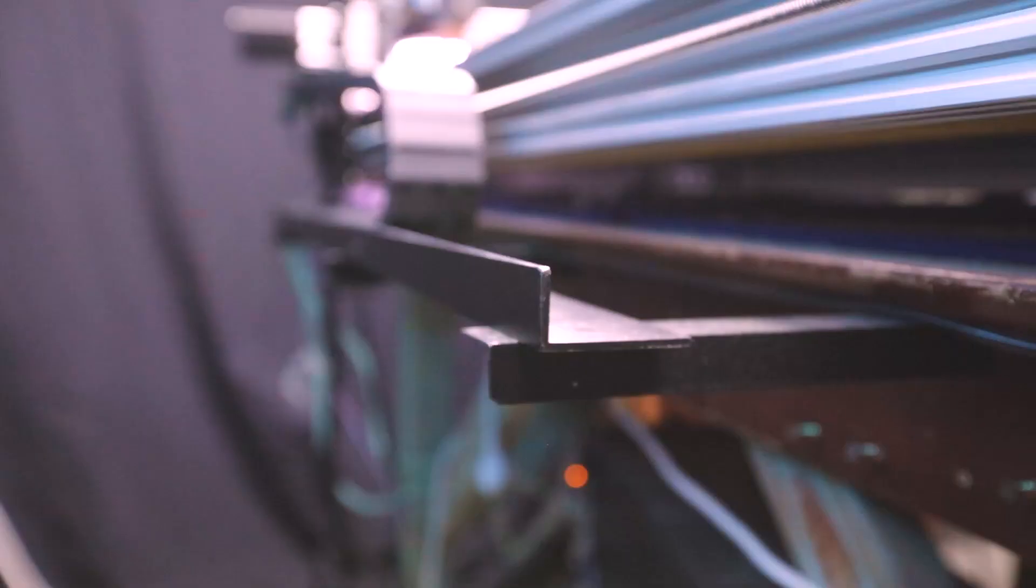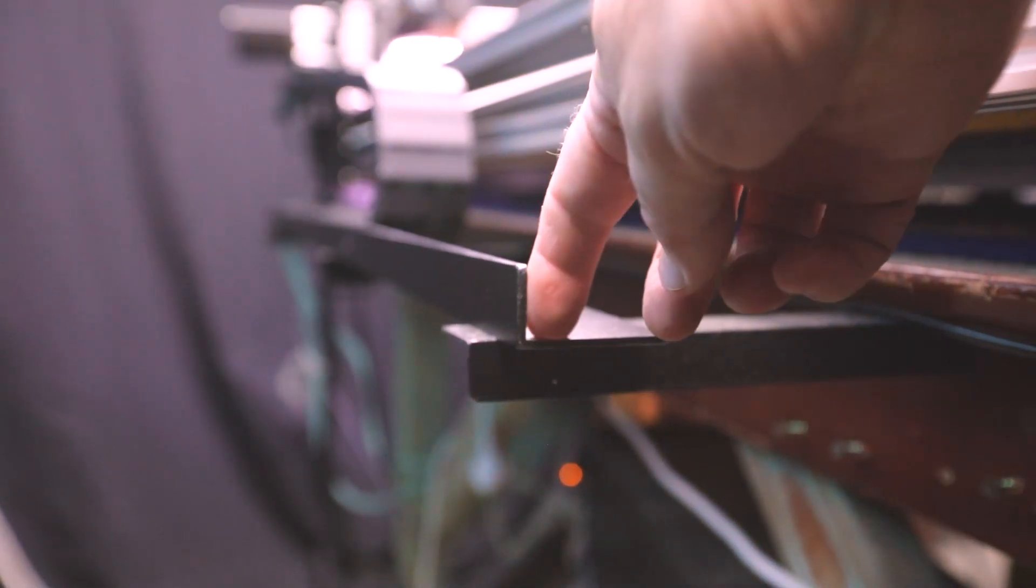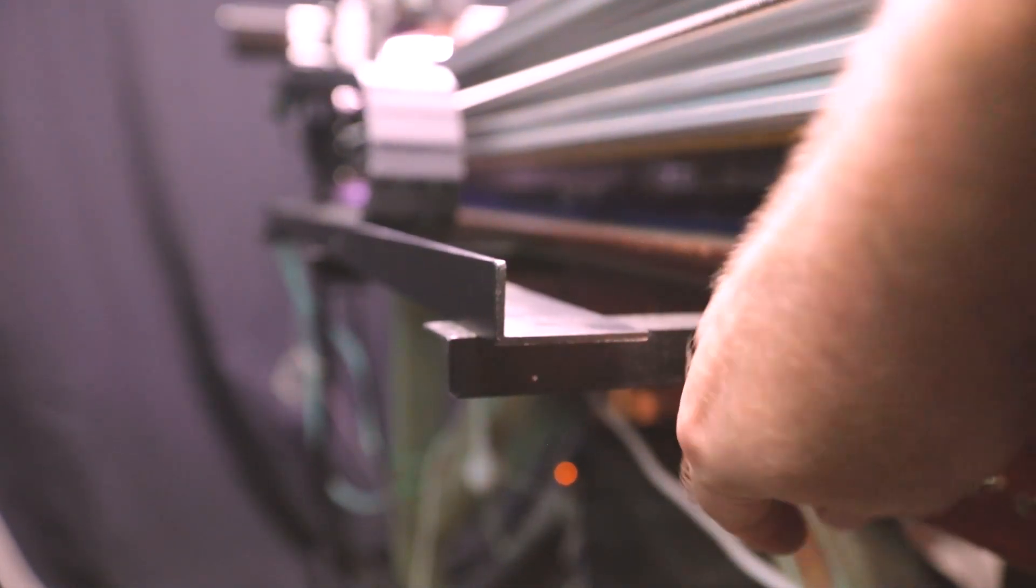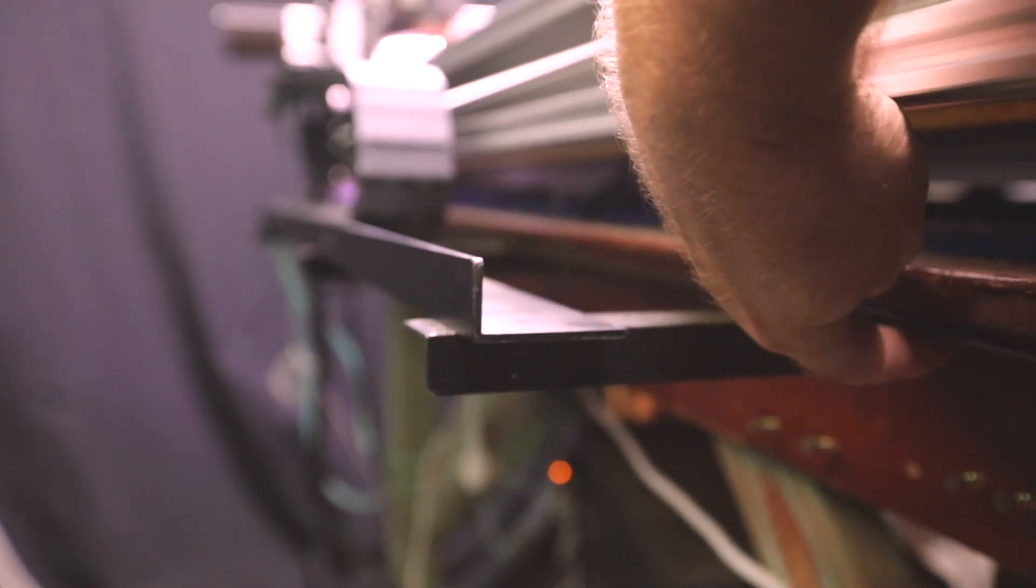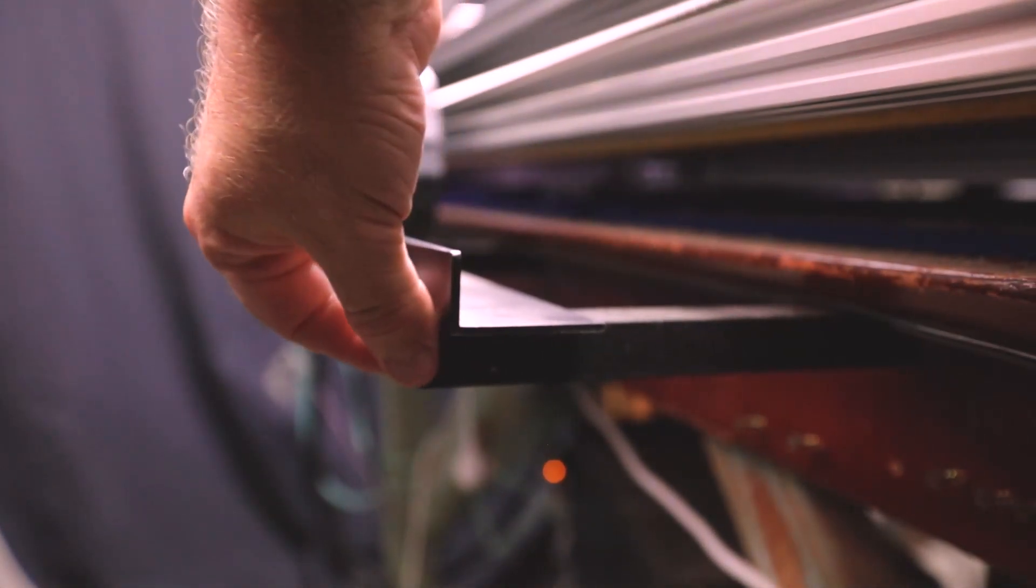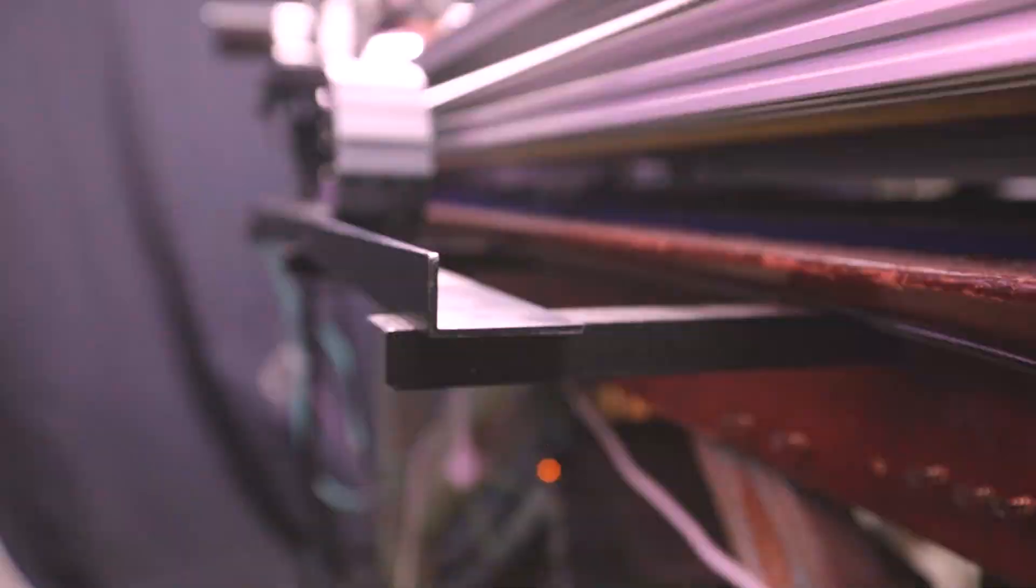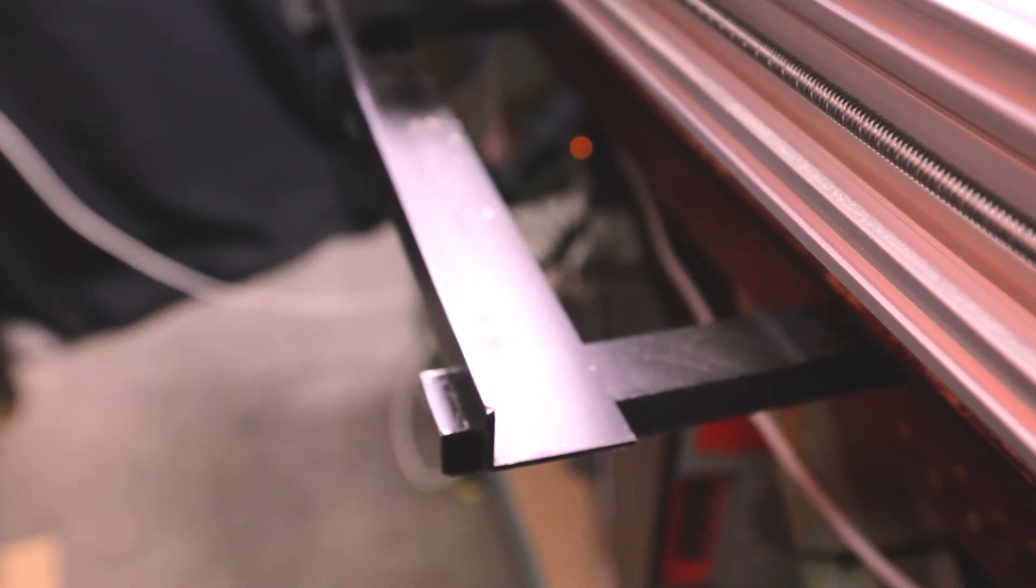And for the cable chain itself, to mount that on the side of the machine, you can see here that I'm just using some L aluminum extrusions there to make sure that the cable chains roll neatly up against the machine.